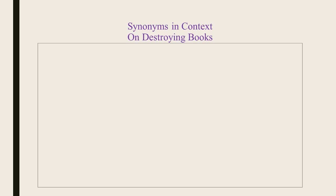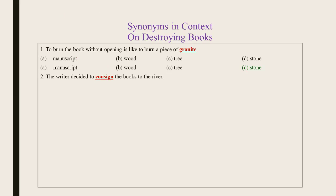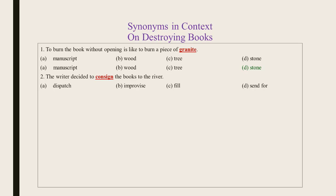Now let's have a look at the exercise for the preparation of synonyms in context on destroying books. Statement 1: To burn the book without opening it is like to burn a piece of granite. The underlined word is granite — the right answer is Stone. Statement 2: The writer decided to consign the books to the river. The underlined word is consign — the right answer is Dispatch.